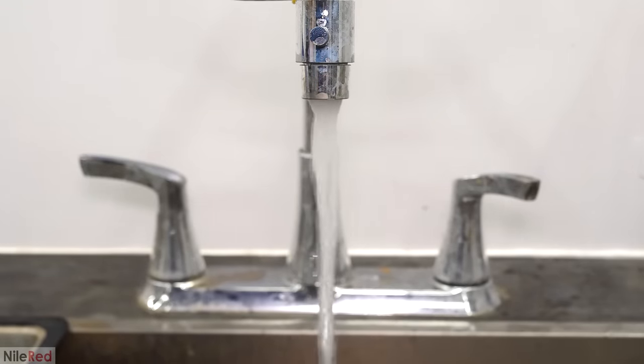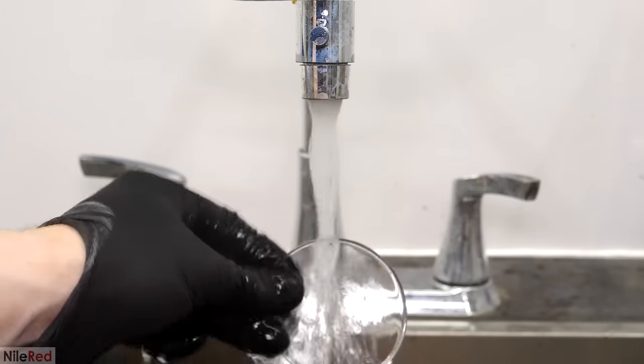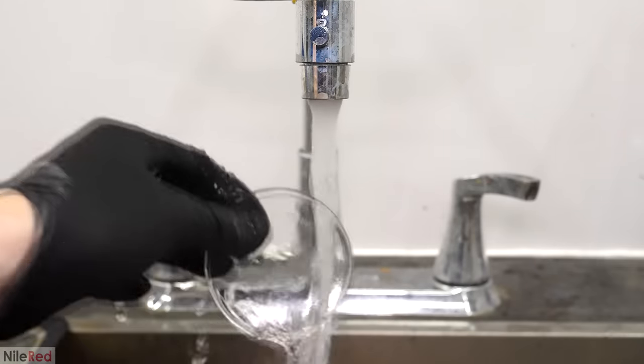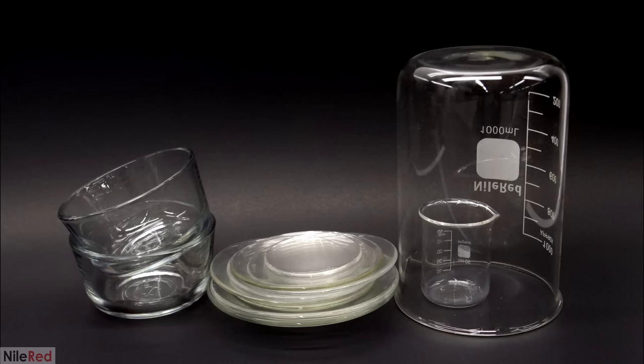After washing it all under the tap I rinsed everything with distilled water and then I let it sit out to dry. Most of the time this gave me really nice and shiny glassware but sometimes there was still a bit of iron left. When this happened though I just had to put it back in the acid bath for another round.